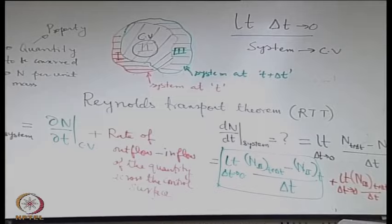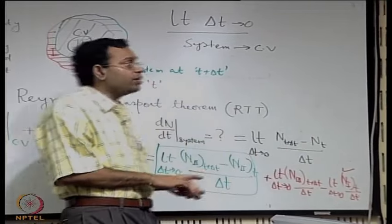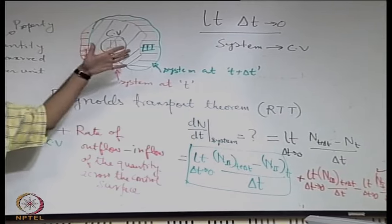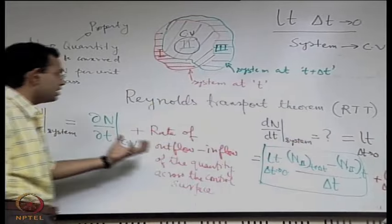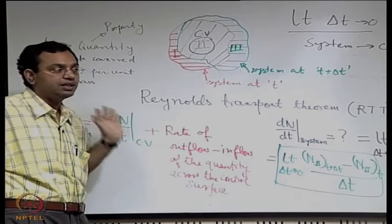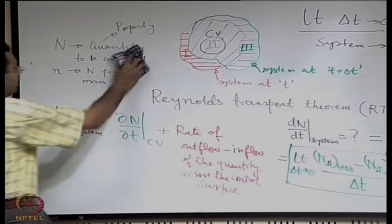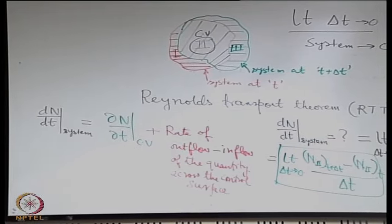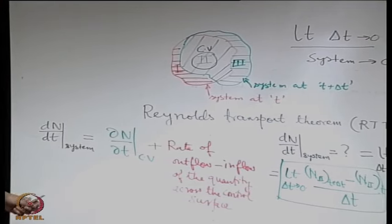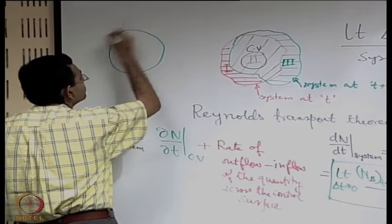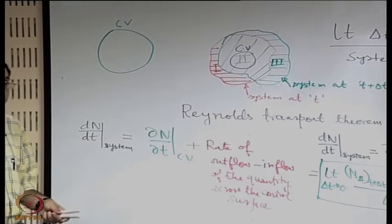These last two terms are surface phenomena, not volumetric. There is some property entering the control volume and some property leaving. The leaving one carries a positive sign and the entering one a negative sign, giving the net rate of outflow minus inflow. To develop a mathematical expression for the rate of outflow, consider the control volume with small n defined as N per unit mass.